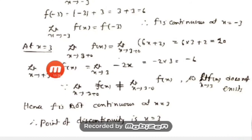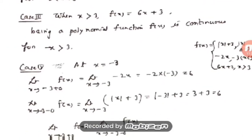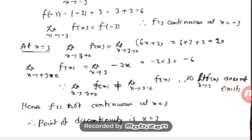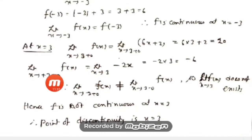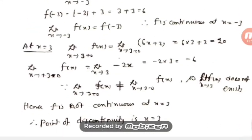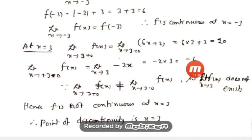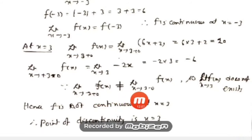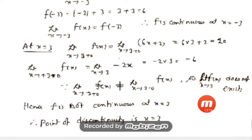Case 5: at x = 3. For x > 3, f is defined by 6x + 2, and for x < 3, by −2x. The right-hand limit: 6(3) + 2 = 20. The left-hand limit: −2(3) = −6. Since 20 ≠ −6, the right-hand limit does not equal the left-hand limit, so the limit does not exist. Therefore f is not continuous at x = 3, and x = 3 is the point of discontinuity.